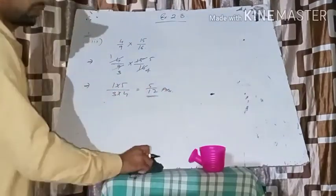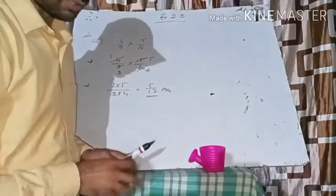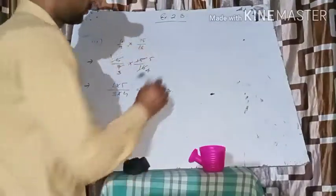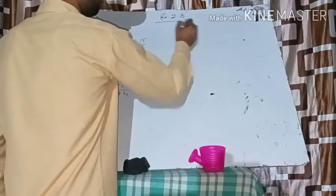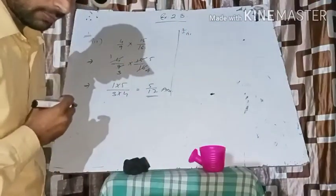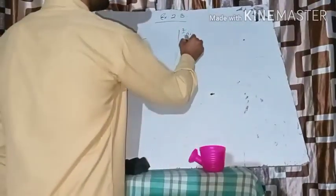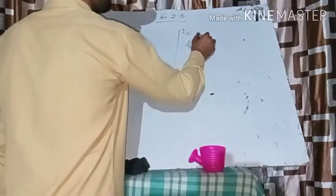In the same way, let's come to one more question, first part of question number two: two by three multiply five by forty-four multiply thirty-three by thirty-five.